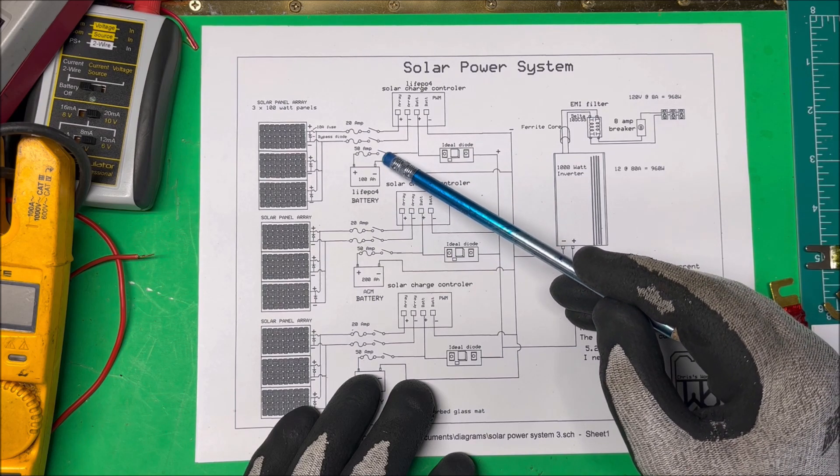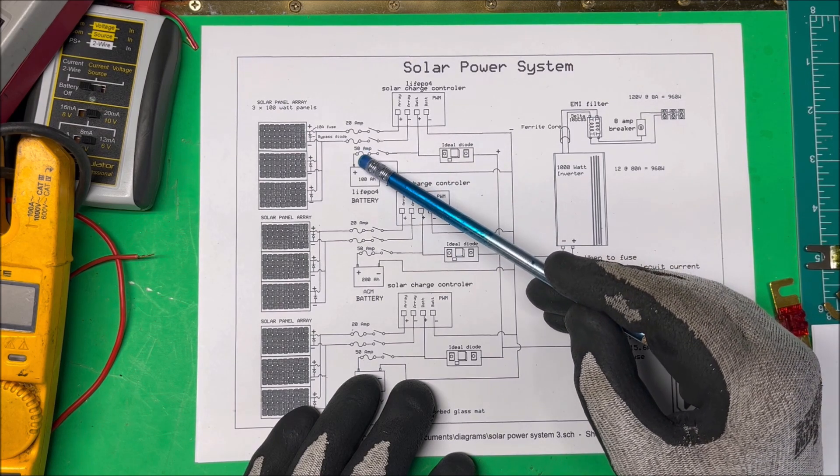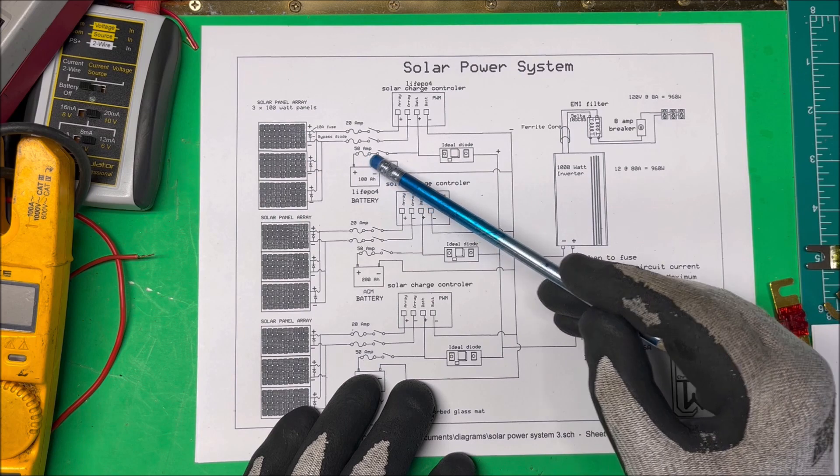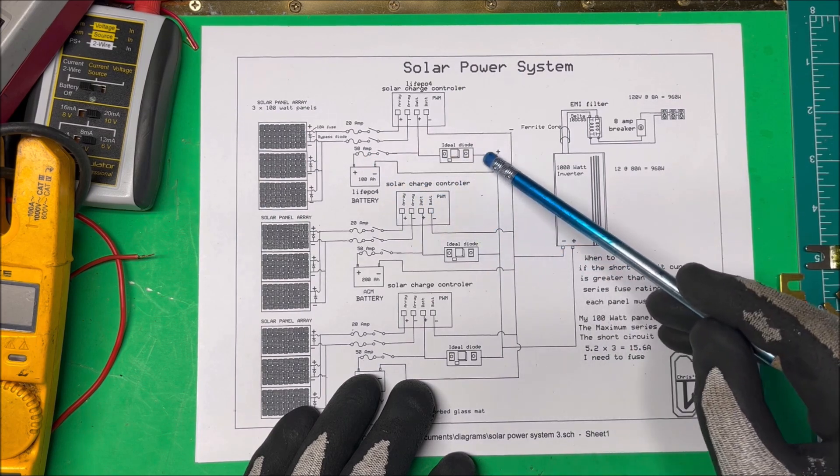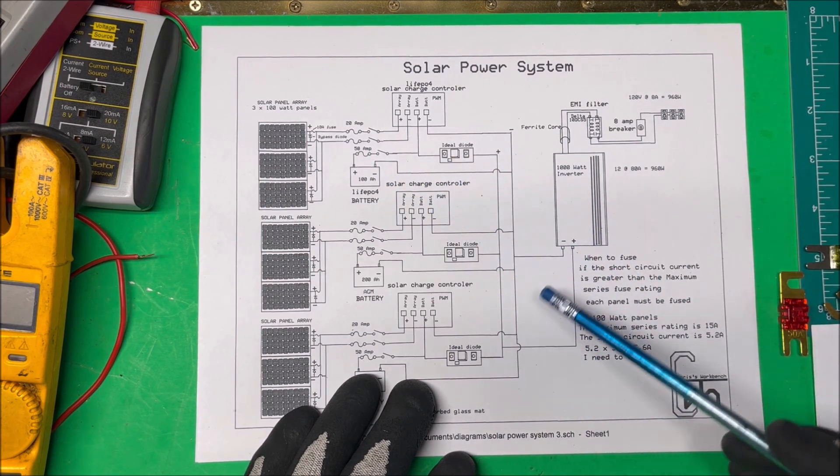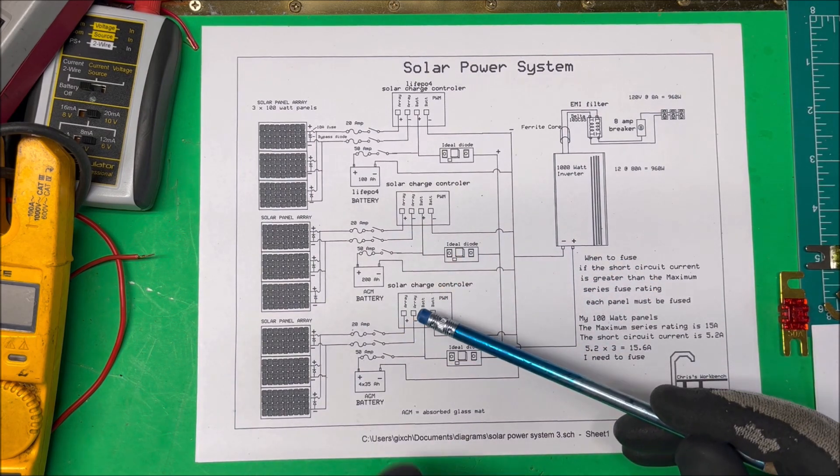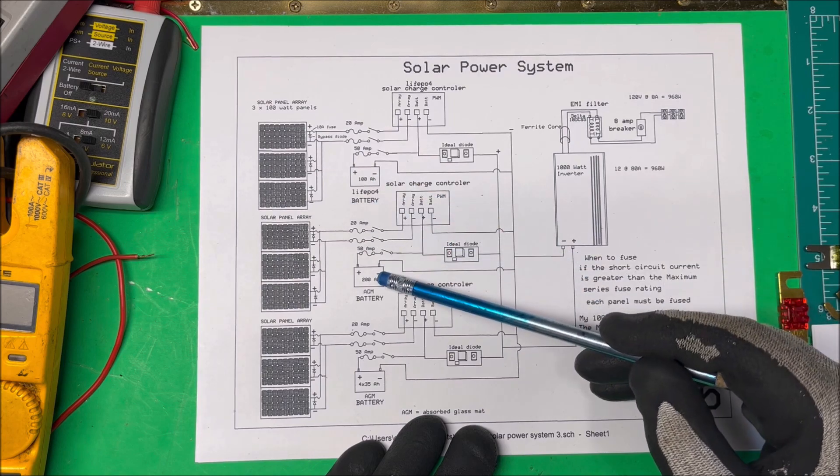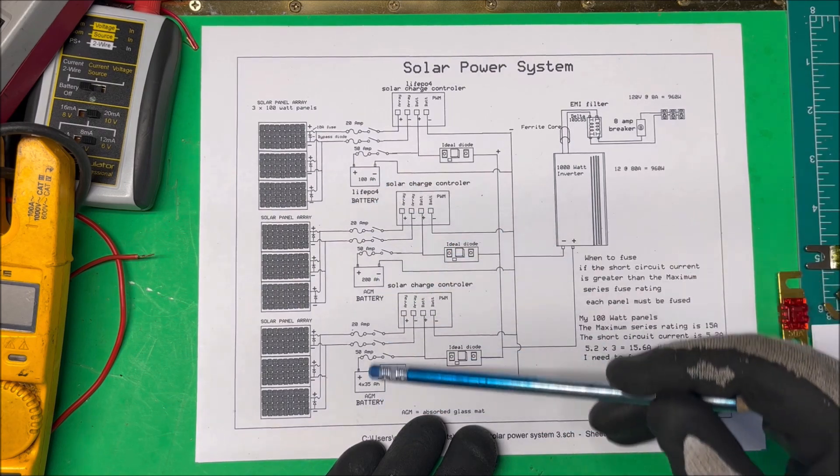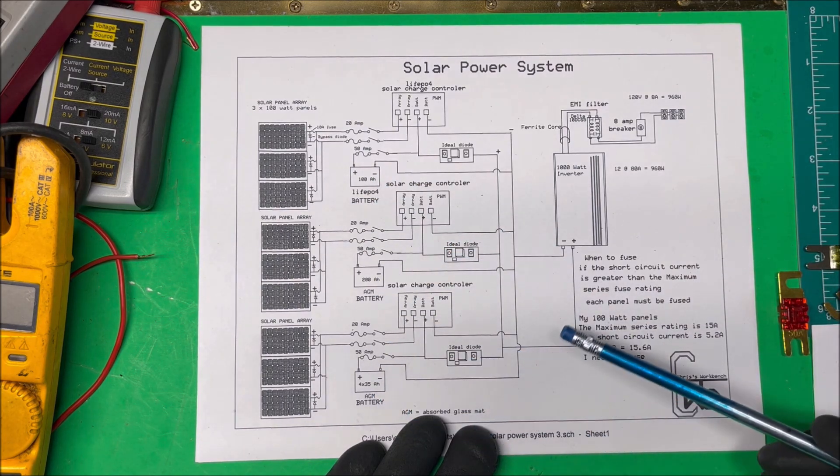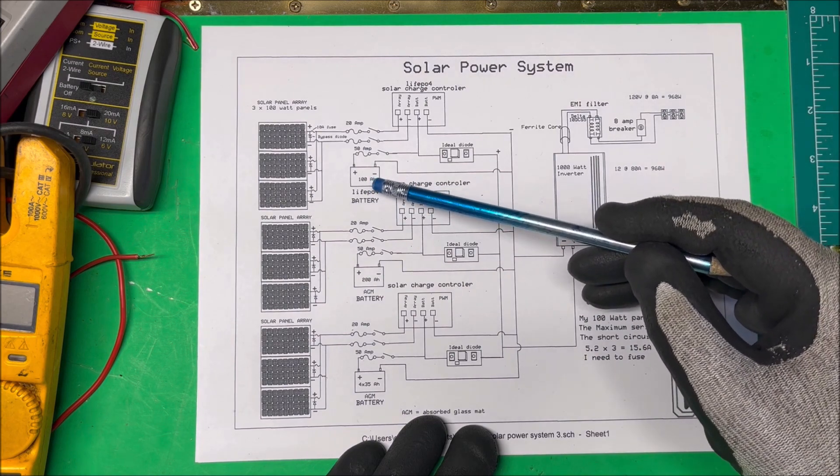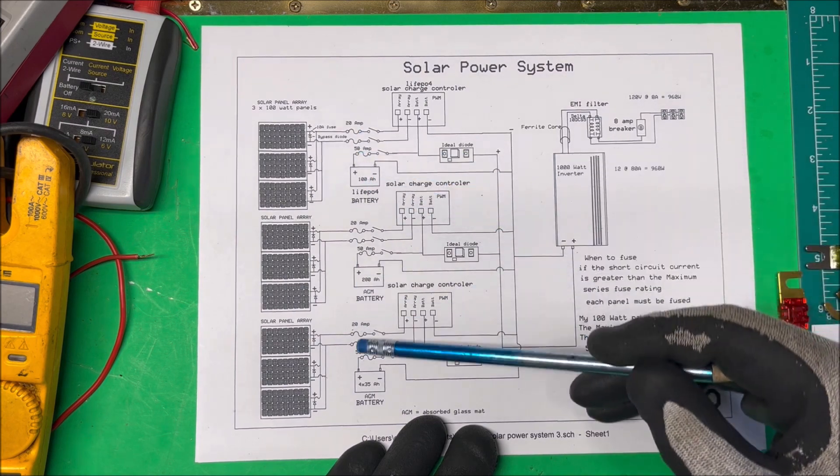I have a switch going to the battery and then I have the batteries fused with 50 amps, so I can't get over 50 amps. My ideal diode, and they all tie together and go into the inverter down here. These are the same thing here.